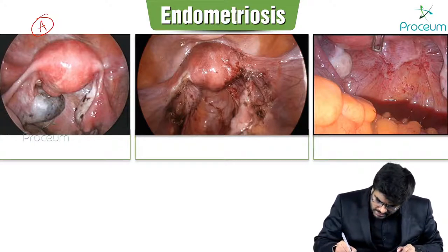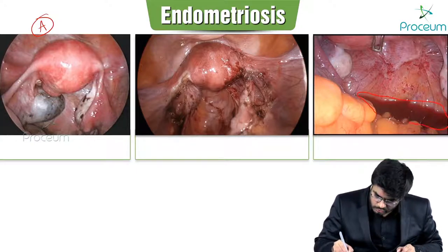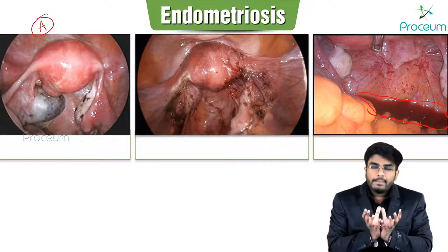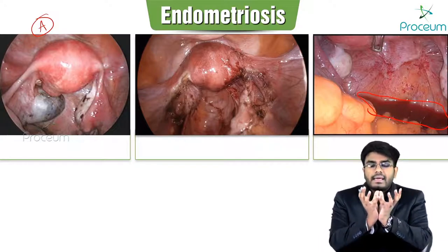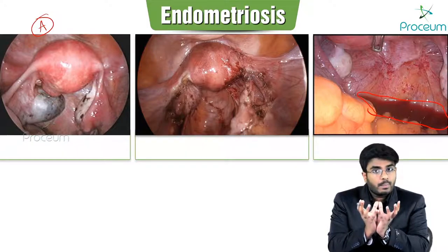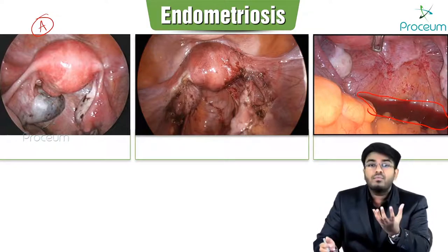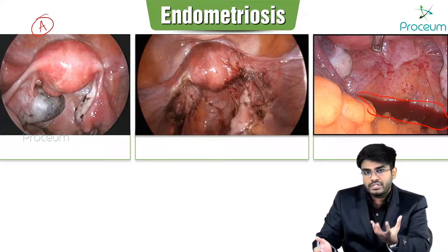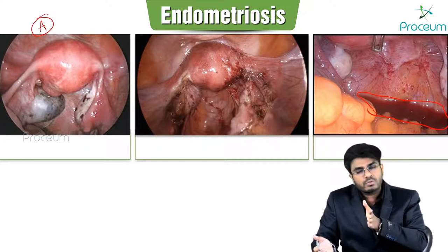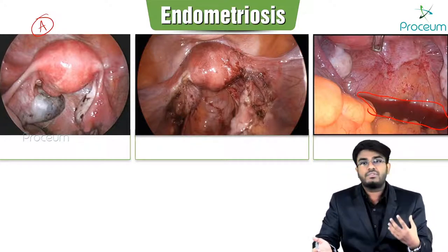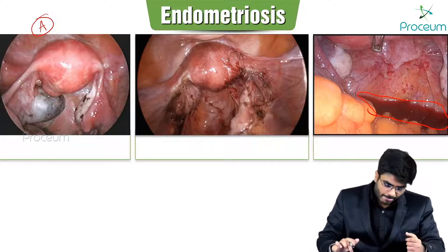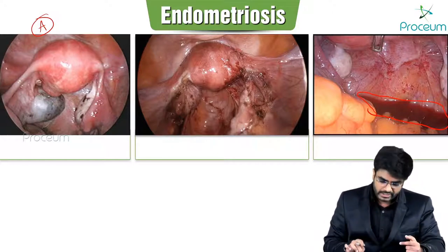On laparoscopy, a powder burn or gunshot appearance is seen due to bleeding endometrial implants along with fibrosis and inflammation. Fluid accumulation of yellowish-brown fluid in the pouch of Douglas can also be seen in patients with endometriosis.